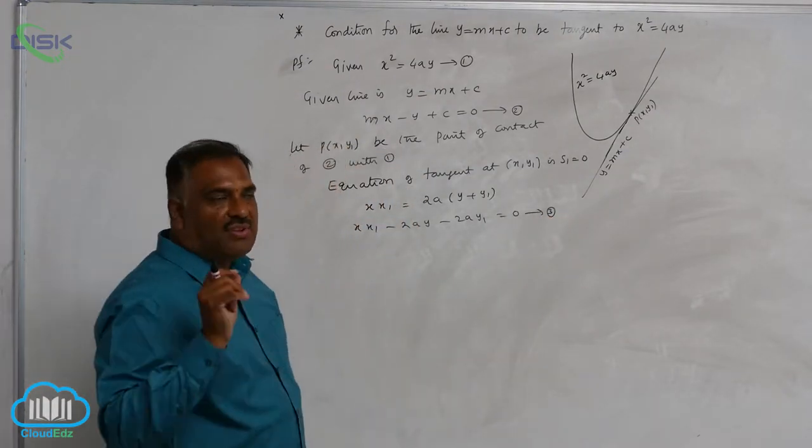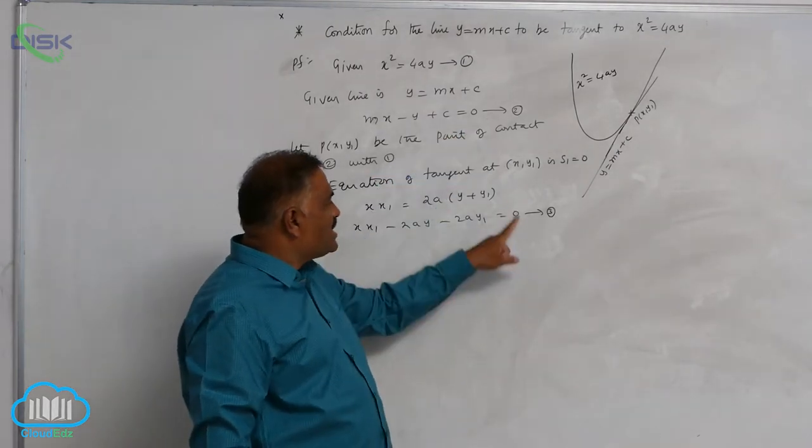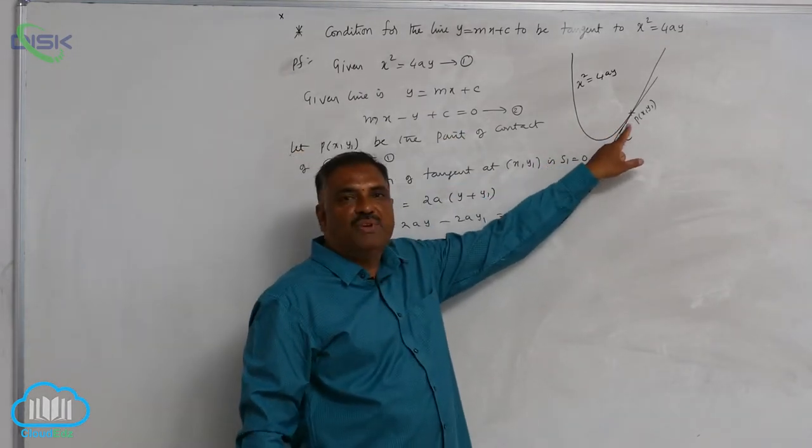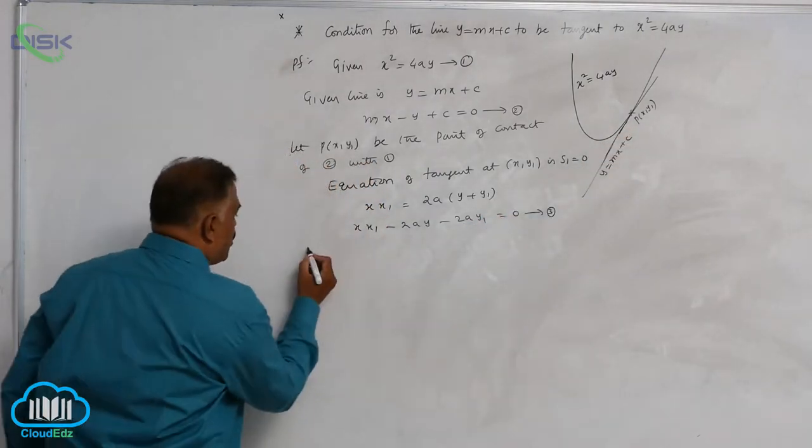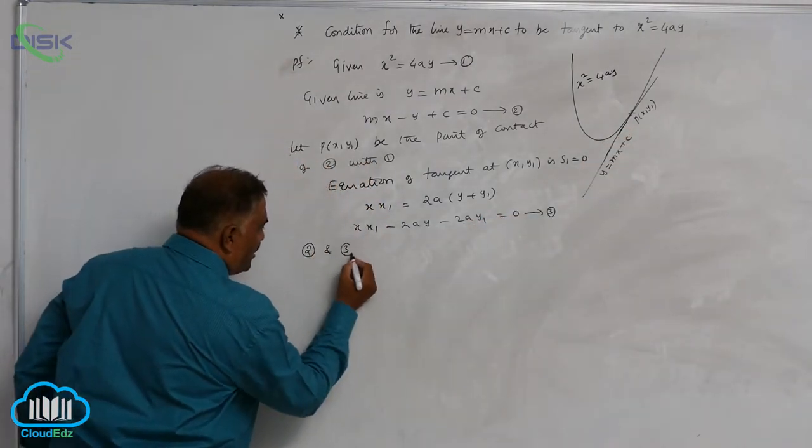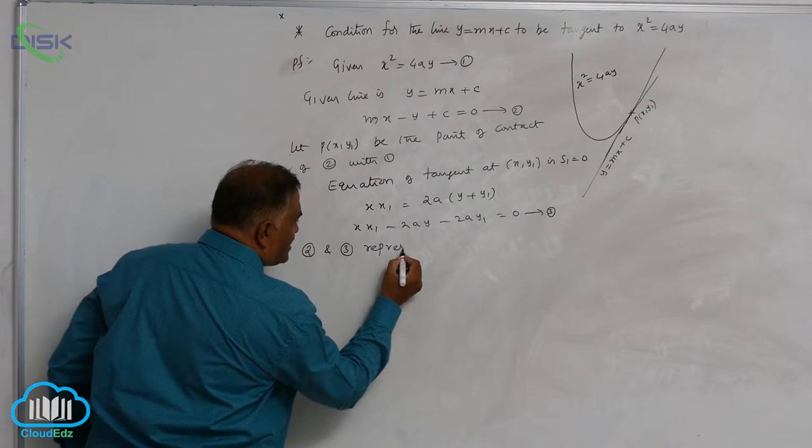Now you see from the figure, 2 and 3 are tangents at the same point P(x1, y1). So 2 and 3 represent the same line, the same tangent line.